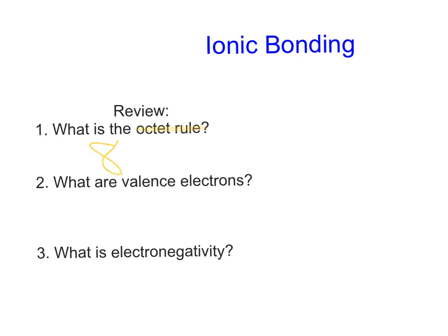Valence electrons — remember, those are the electrons in the outermost energy level, and that magic number again is eight. We want them; those are the outermost energy level electrons.